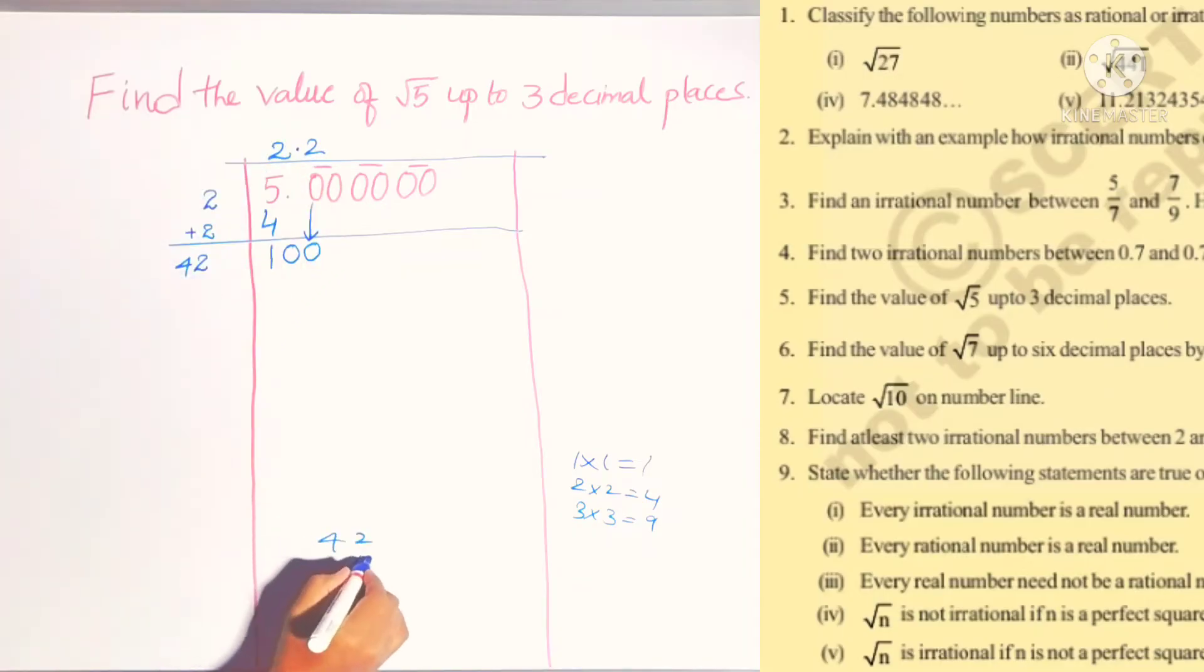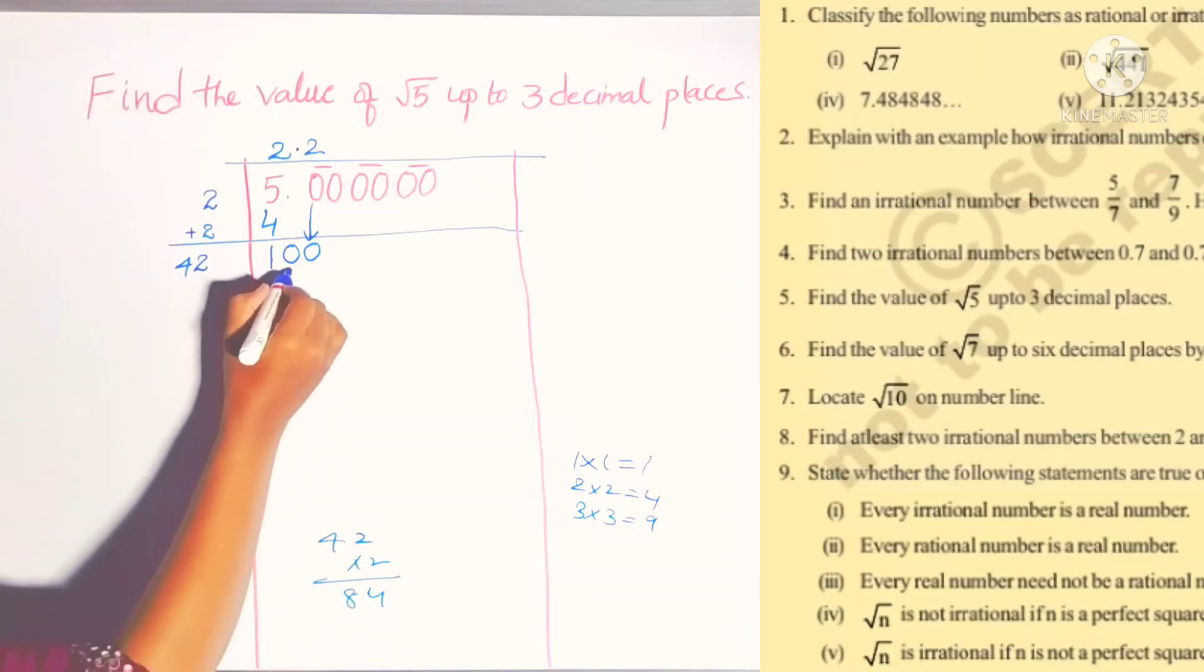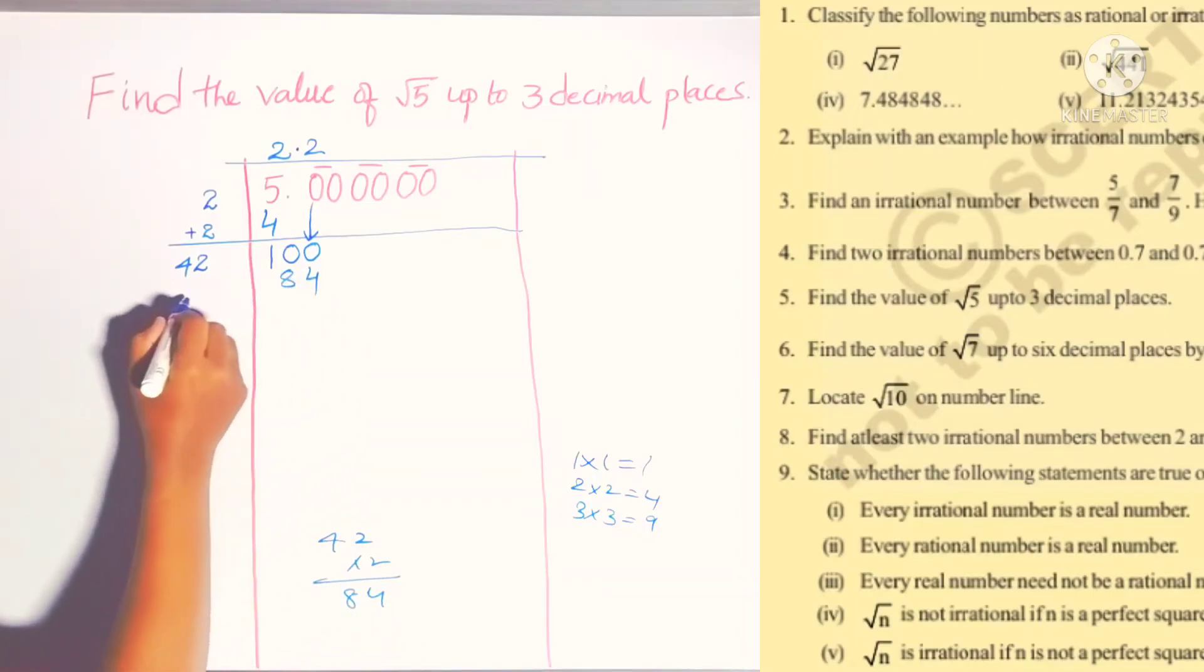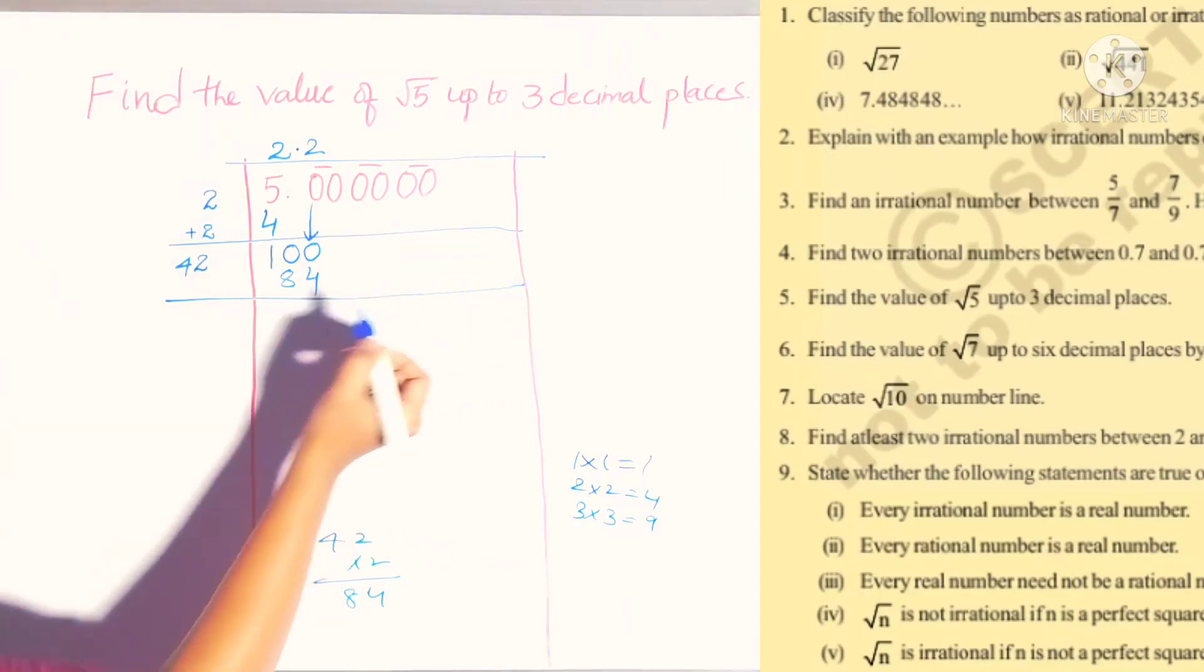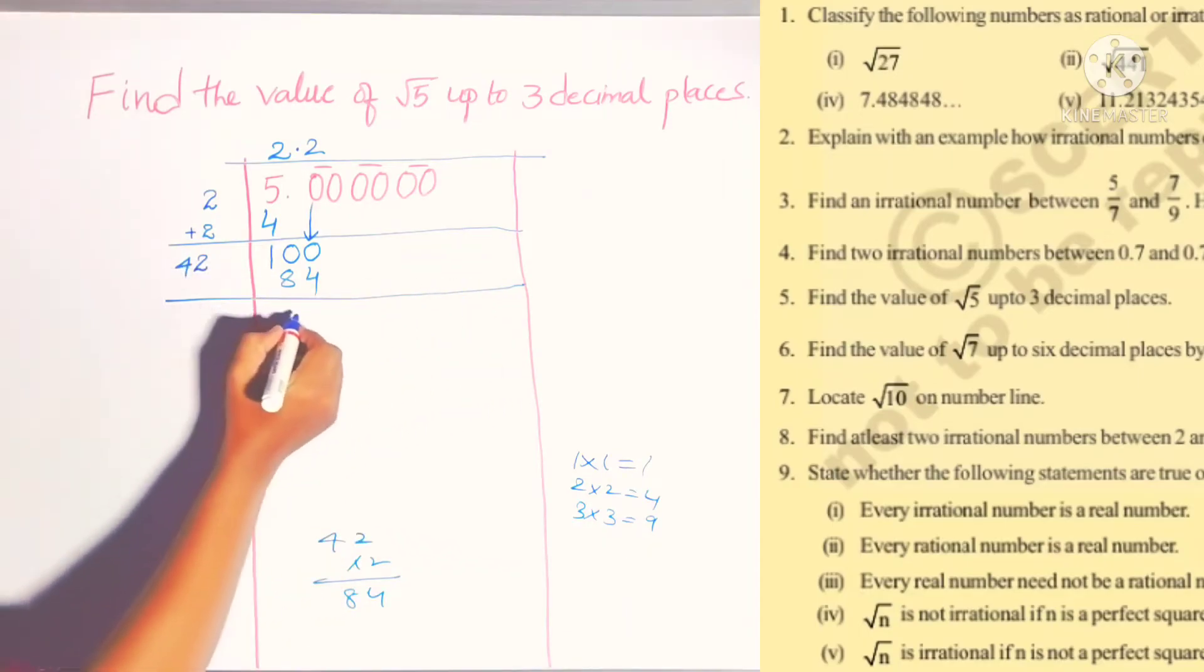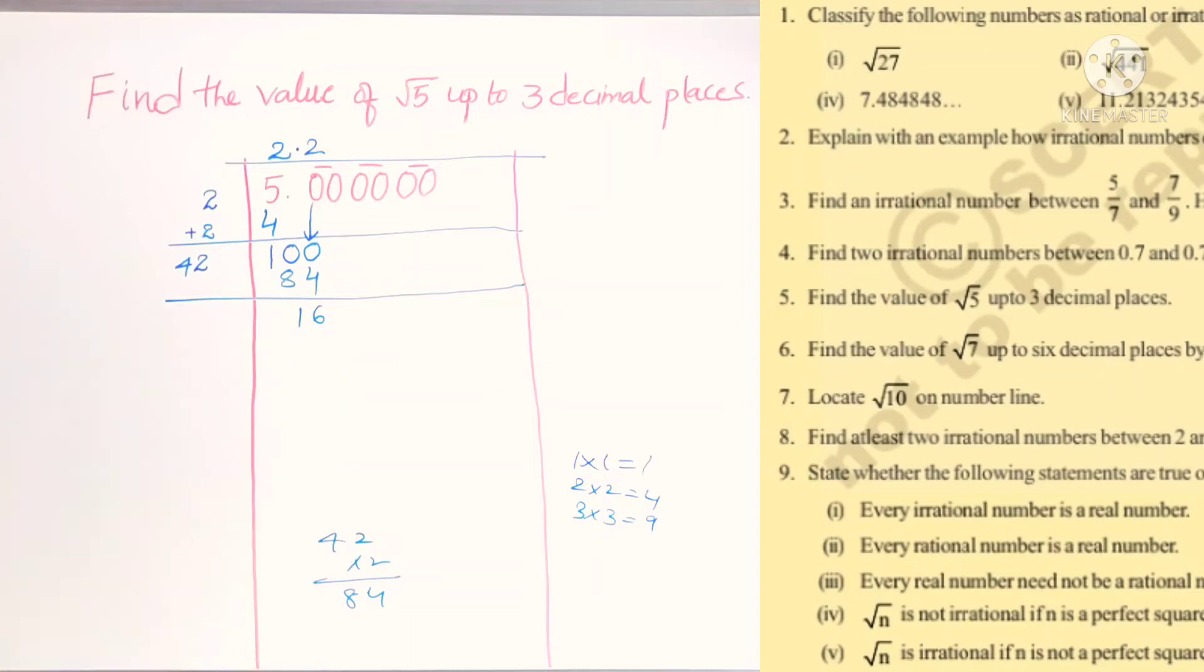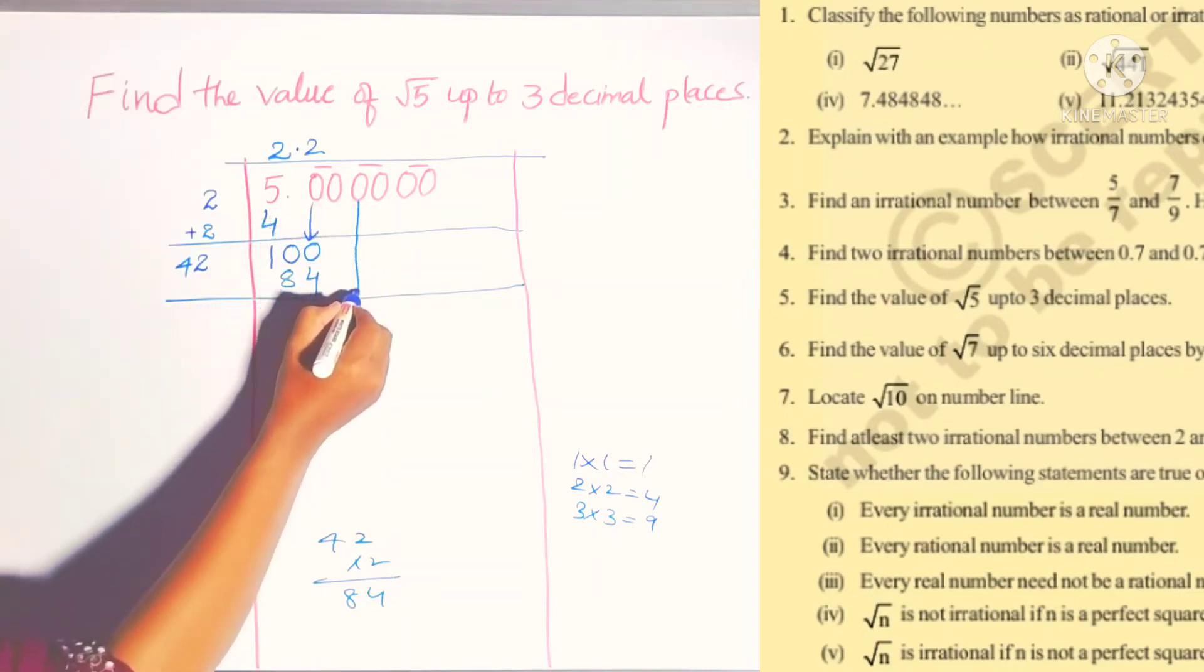42 times 2: 2 times 2 is 4, 2 times 4 is 8, so it is 84. After subtracting, 100 minus 84 gives us 16. Again we can bring the next set of zeros down.